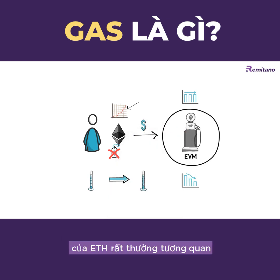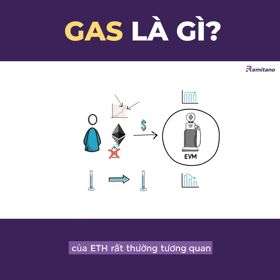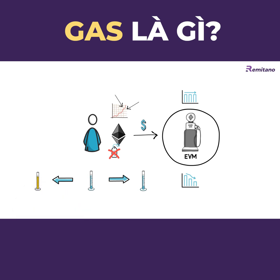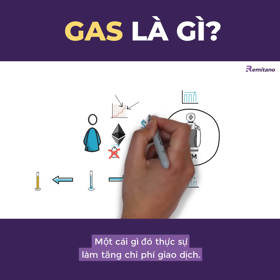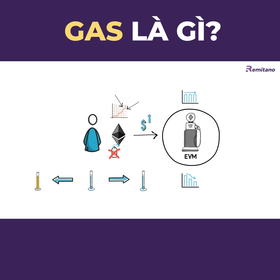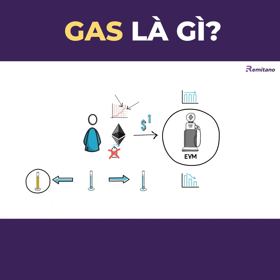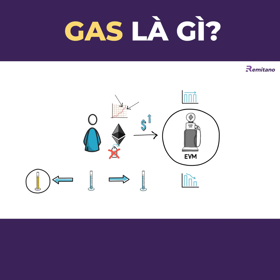That said, a price increase of ETH is very often correlated with an increase in activity on the Ethereum network, something that indeed increases the cost of transactions. Now let's see how exactly an increase in network activity causes the transaction cost to go up.